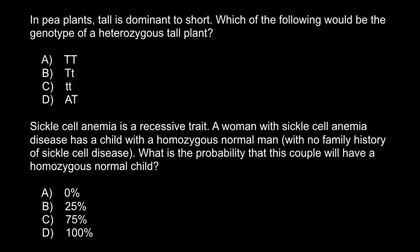Hello and welcome to Nikolai's genetics lessons. Today I have prepared two very easy questions for you, but I have a warning: one of these questions is tricky. The first question is: in pea plants, tall is dominant to short. Which of the following would be the genotype of a heterozygous tall plant? Here are four answers to choose from.